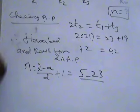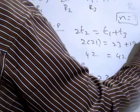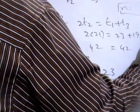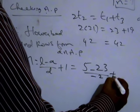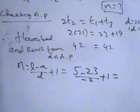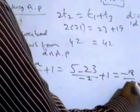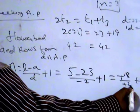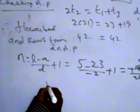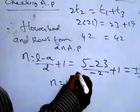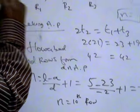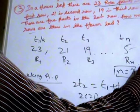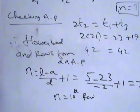D is T2 minus T1 = 21 minus 23 = minus 2. So N = (5 − 23)/(−2) + 1 = (−18)/(−2) + 1 = 9 + 1 = 10. Therefore, there are 10 rows. In the first row there are 23 rose plants, and in the 10th (last) row there are 5 rose plants. This is a practical problem.